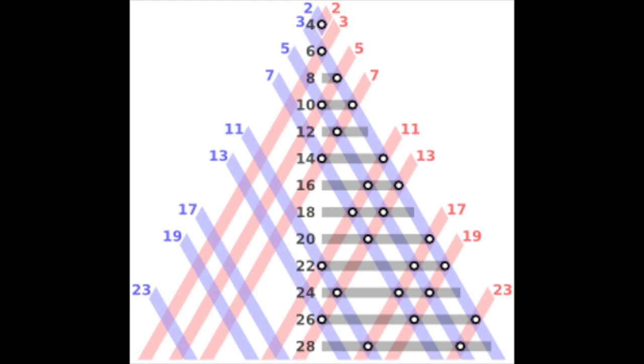Even integers from four to twenty-eight as sums of two primes: even integers correspond to the horizontal lines. For each prime, there are two oblique lines, one red and one blue.